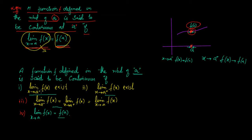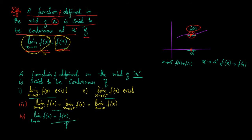Therefore a function f will not be continuous at a point a if at least one of these four conditions is not satisfied — meaning if the left-hand limit or the right-hand limit does not exist, or they are not equal, or even if they are equal, the overall limit is not equal to the function value at that point. There are different cases which give rise to different types of discontinuities, and we shall study all those types one by one.